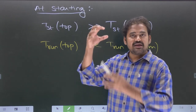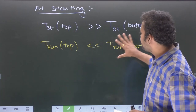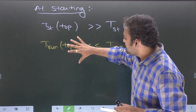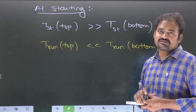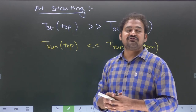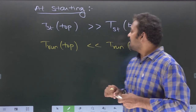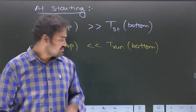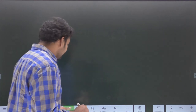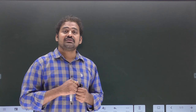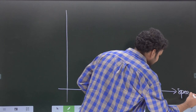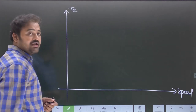If we combine both layers together in the same induction motor, starting torque will be high and running torque will also be high. Let's draw the torque-speed characteristics of the double cage induction motor. We take speed on the x-axis and torque on the y-axis. We will draw the top layer torque-speed characteristics first, then the bottom layer, and combine them to get the resultant characteristics.